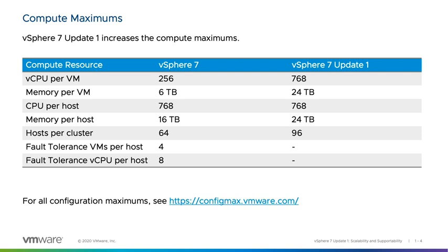Previous restrictions on the number of fault-tolerance VMs and fault-tolerance vCPUs per host have been removed in vSphere 7 Update 1. The maximum number of virtual CPUs per individual fault-tolerance VM remains at 8 virtual CPUs. For all configuration maximums, see configmax.vmware.com.